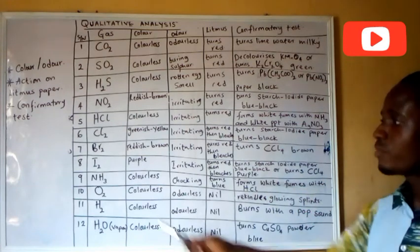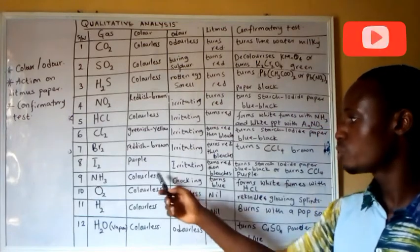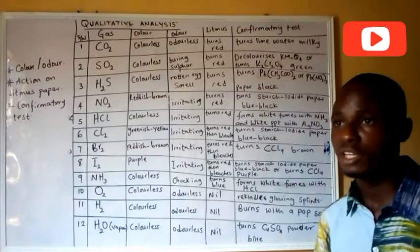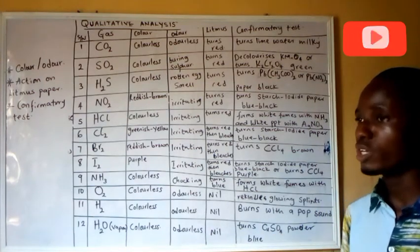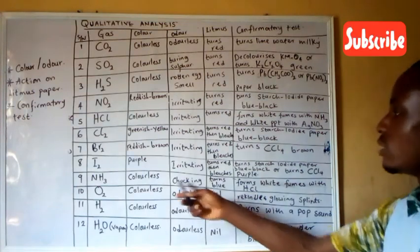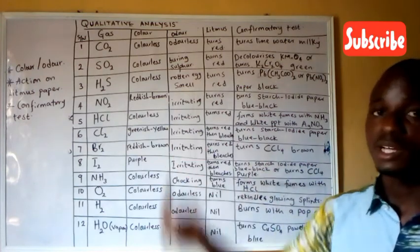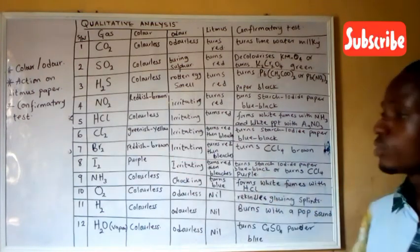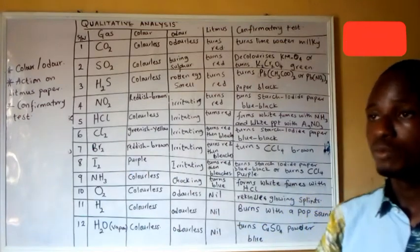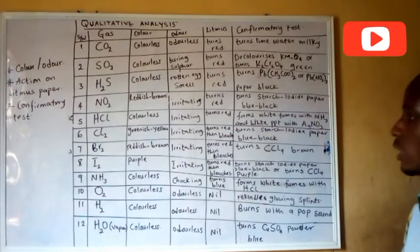NH3 (ammonia) is colorless with a choking, irritating smell sometimes compared to the smell of urine. It is the only basic gas in inorganic chemistry. Its confirmatory test: it forms white fumes with HCl solution — not HCl gas — producing ammonium chloride (NH4Cl).